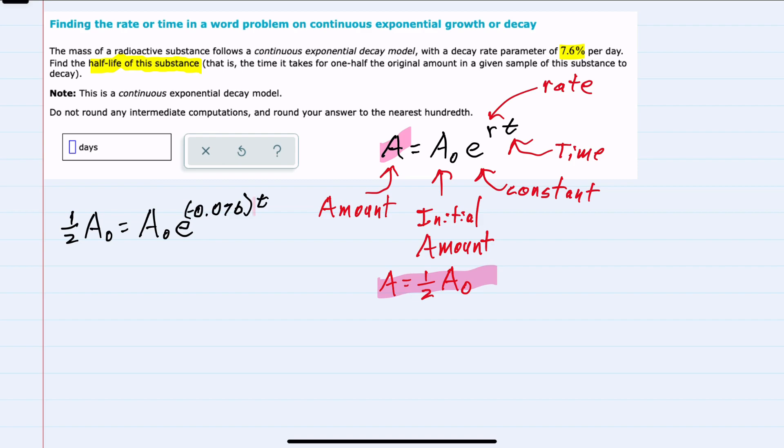And t here is our unknown, that's what we're trying to find. But we can see that on both sides we have A₀, and we can divide both sides by that A₀ to remove it from the equation. This should make sense because the half-life doesn't depend on how much we started with, just the rate of decay.